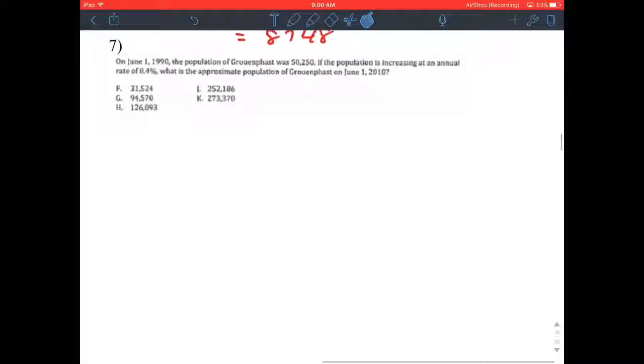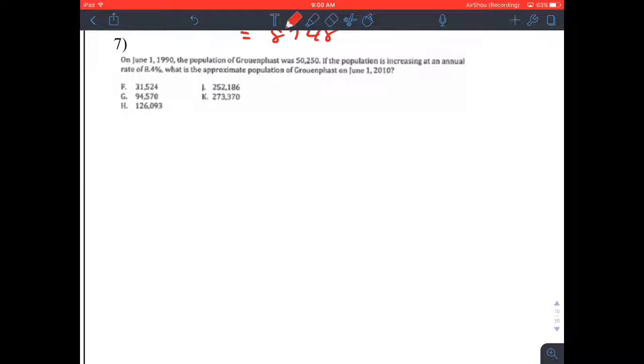Number 7. On July 1st, 1990, the population of Gronzfat was 50,250. Starting population. The first number in our sequence is 50,250.